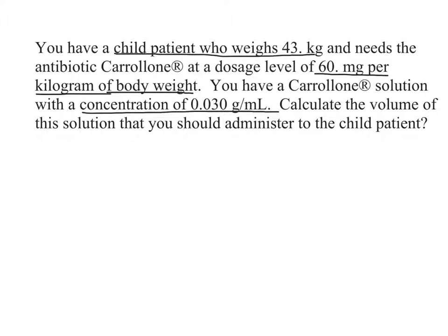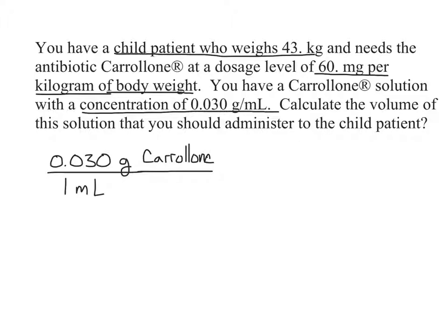Let's look at the concentration value we're given — that's the concentration of the carolone solution. It's most convenient to rewrite this value in fractional form: 0.030 grams per one milliliter. It's important to add complete labels to the numerator and denominator. The numerator is 0.03 grams of carolone, and the denominator is one milliliter of carolone solution. What this fraction means is that there are 0.03 grams of carolone for every one milliliter of the carolone solution.